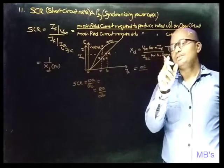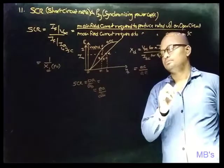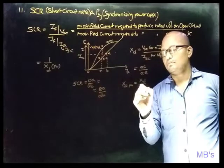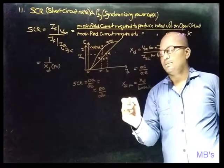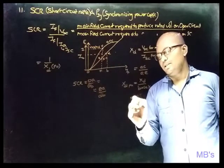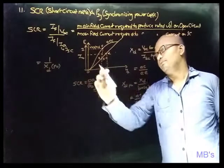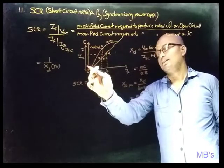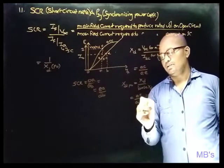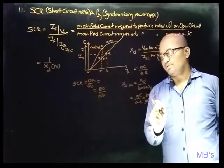For ISC with the same IF of OA, the ISC is AE. Now, Xt per unit equals Xt divided by base Xt. That gives Xt as AC divided by AE, and the base Xt is V-rated divided by I-rated. V-rated equals AC and I-rated equals BD, so this simplifies to BD divided by AE. Observing the similar triangle relationships, this cancels to give SCR equal to 1 divided by Xt per unit.